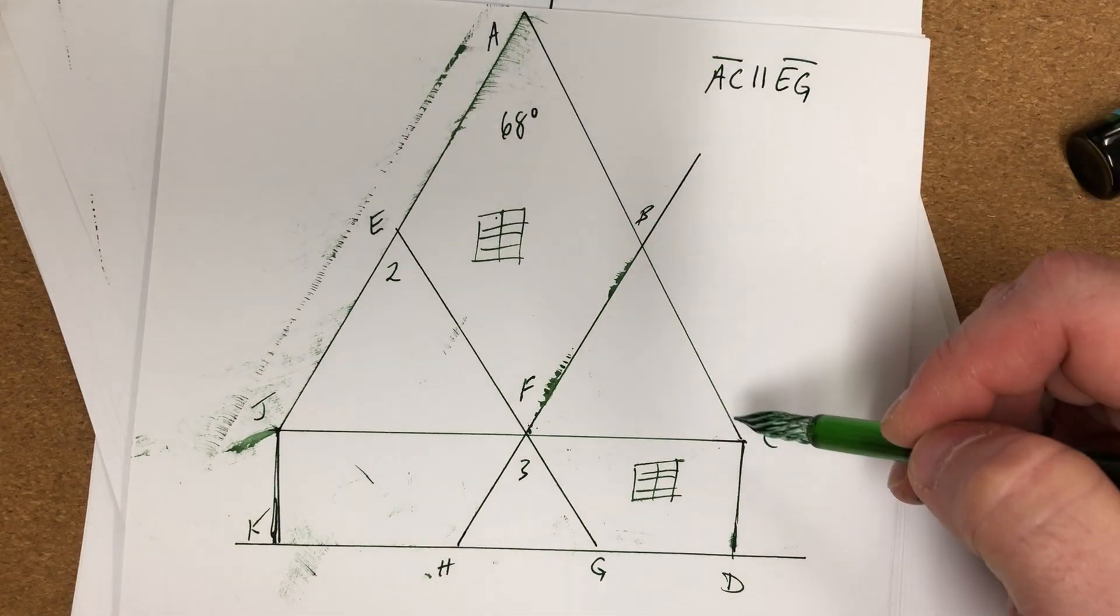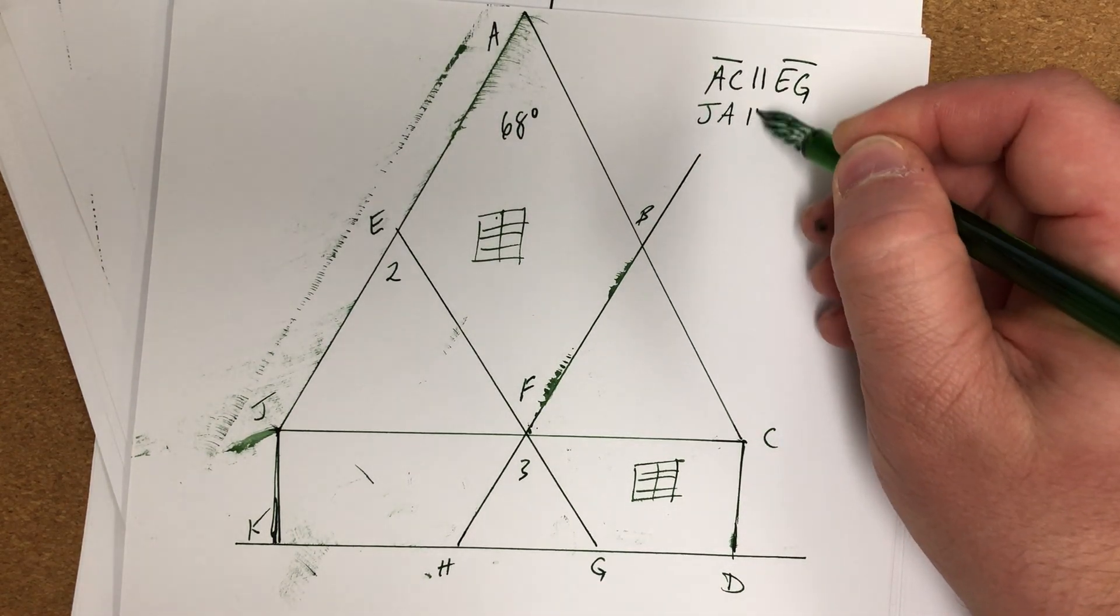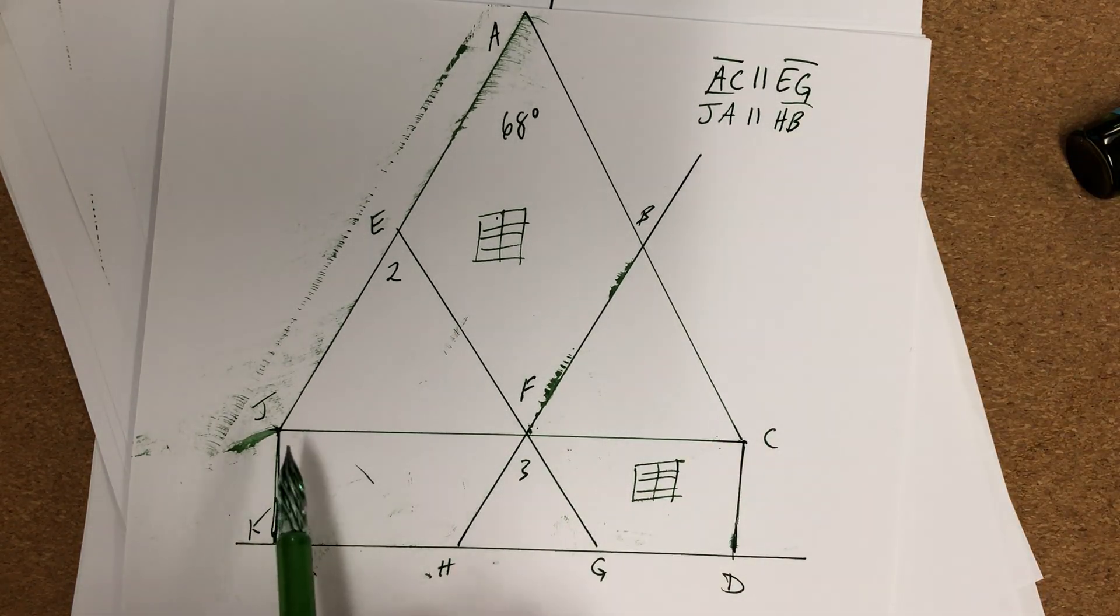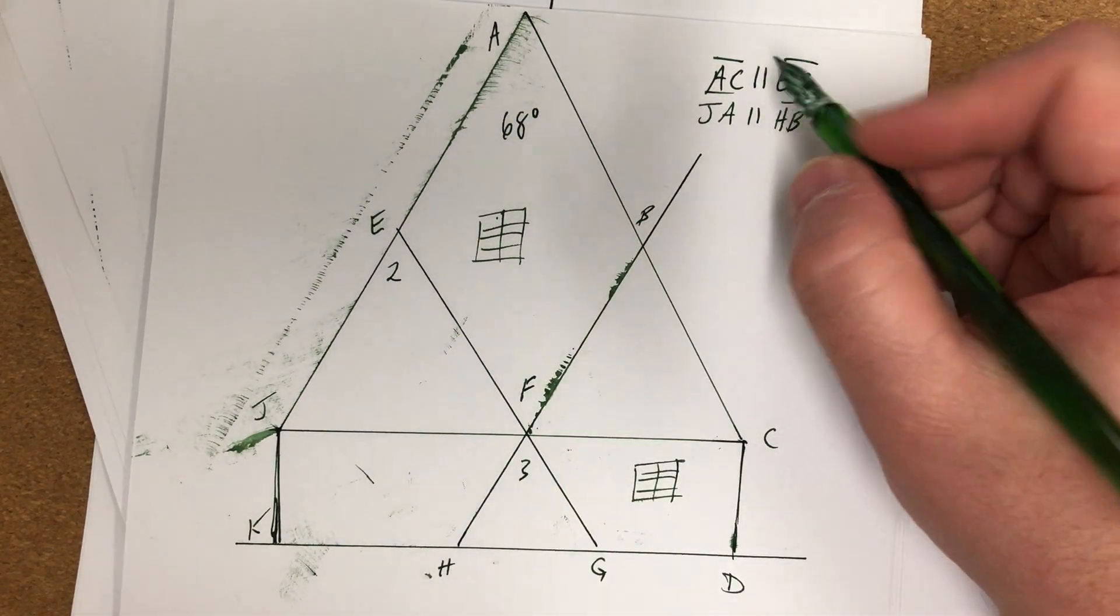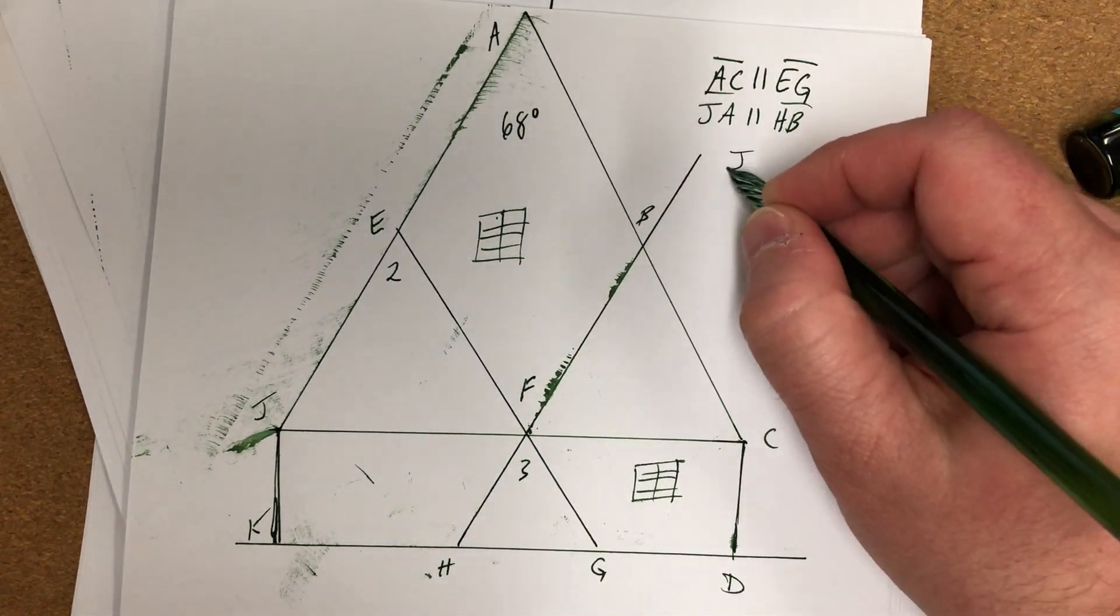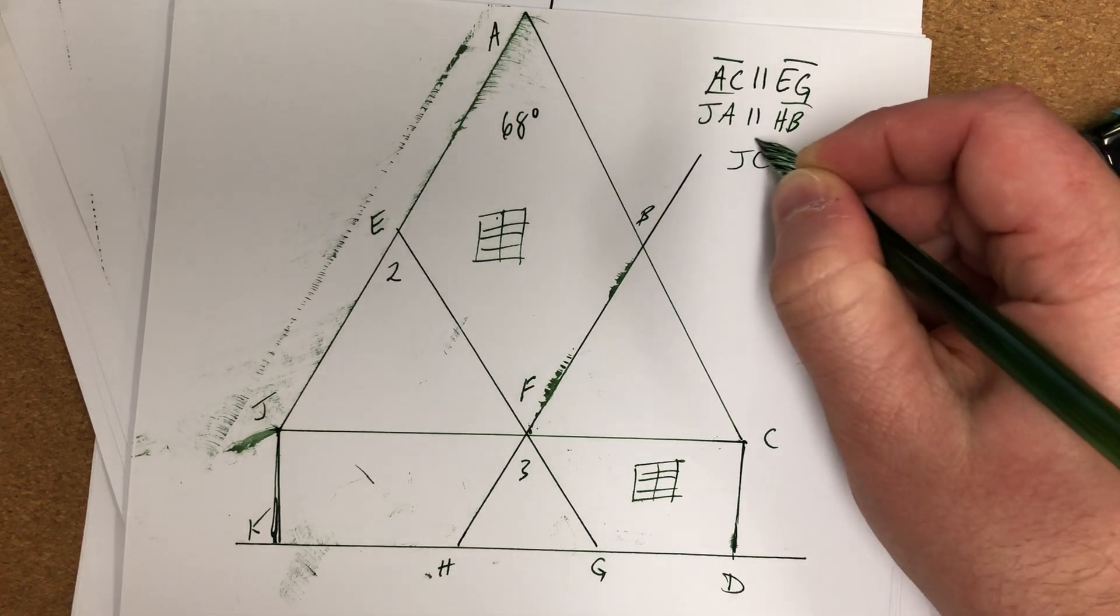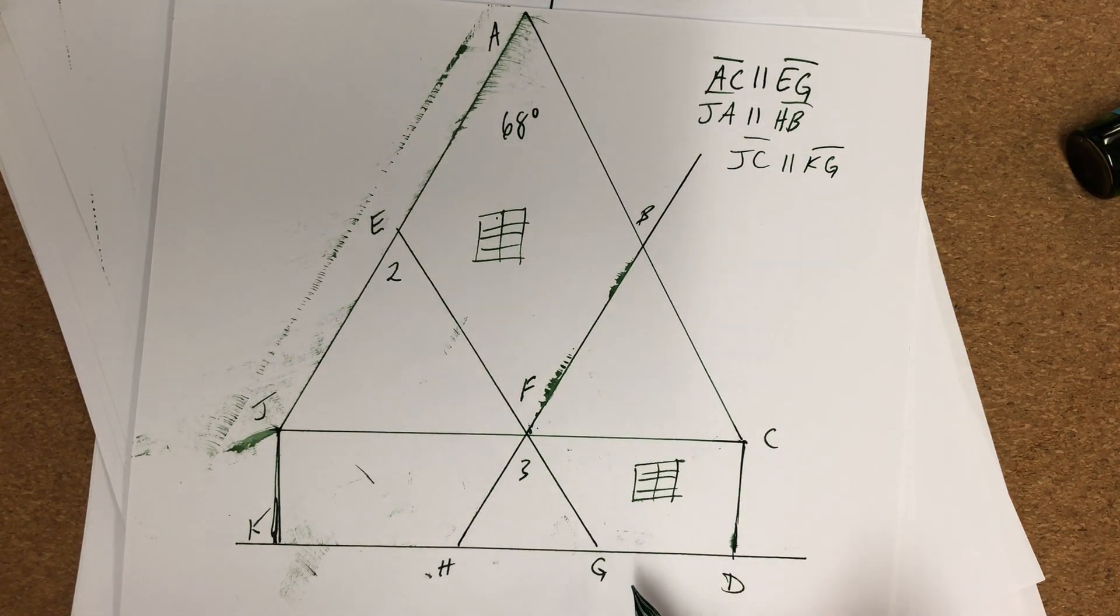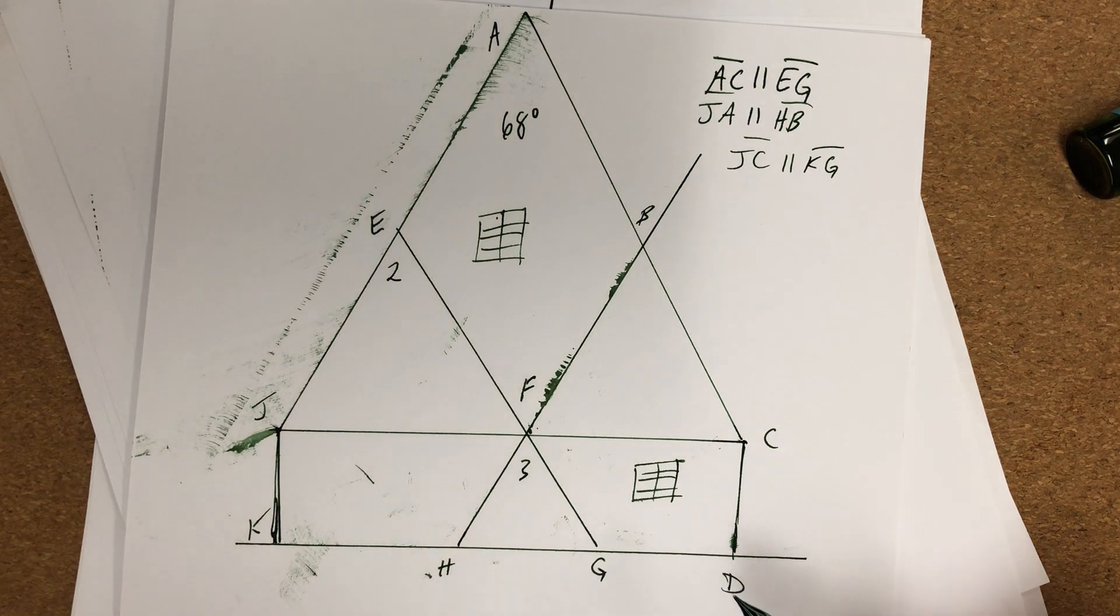But EG and AC, those are parallel. Then JA is parallel to HB, so that's JA, HB, so parallel. And then JC is parallel to KG. Let's see, JC, KG. Why not KD? I'm confused. Okay, so...